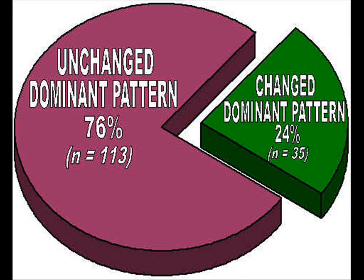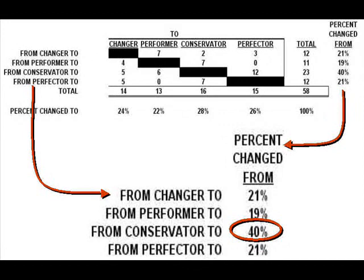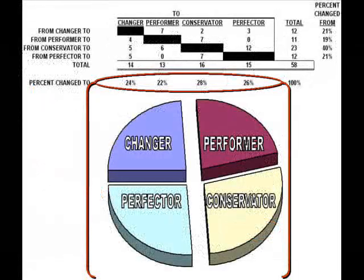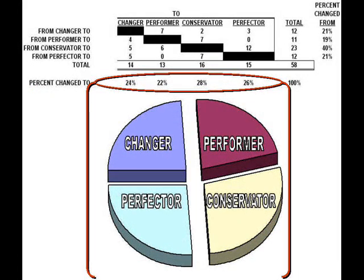What if we pull the obviously manipulative and inconsequential changes from the data? The dominant pattern reliability rate jumps from 66% to 76%. And there is still stress — all we took out was the most egregious examples. This table shows that people using the conservator strategy were twice as likely to change their pattern on retest — 40% versus about 20% for everyone else. The structure of the experiment did not allow for interviews, so we don't know why more conservators tried to change their results. But we know that they certainly tried harder to change.